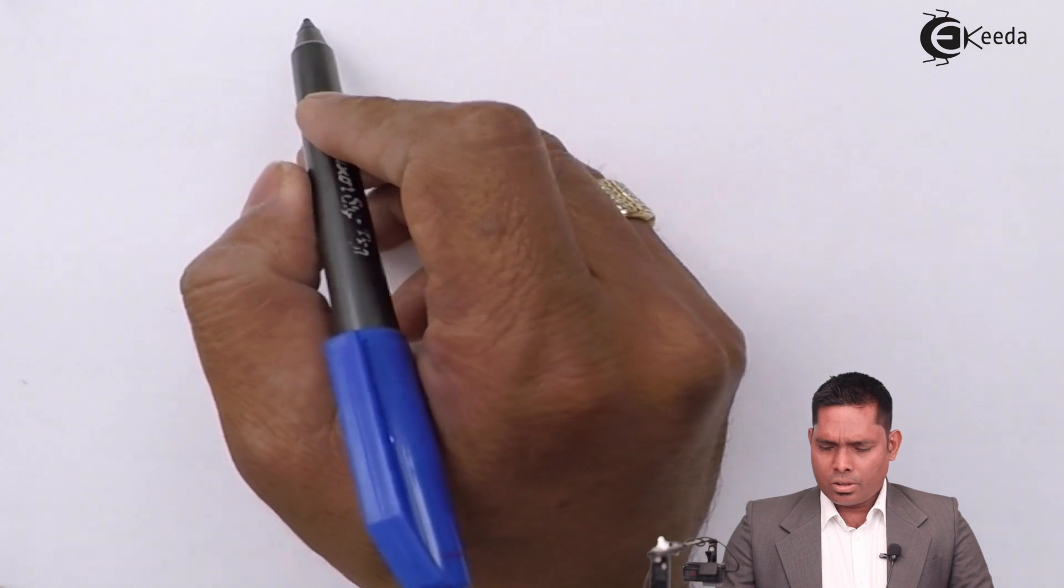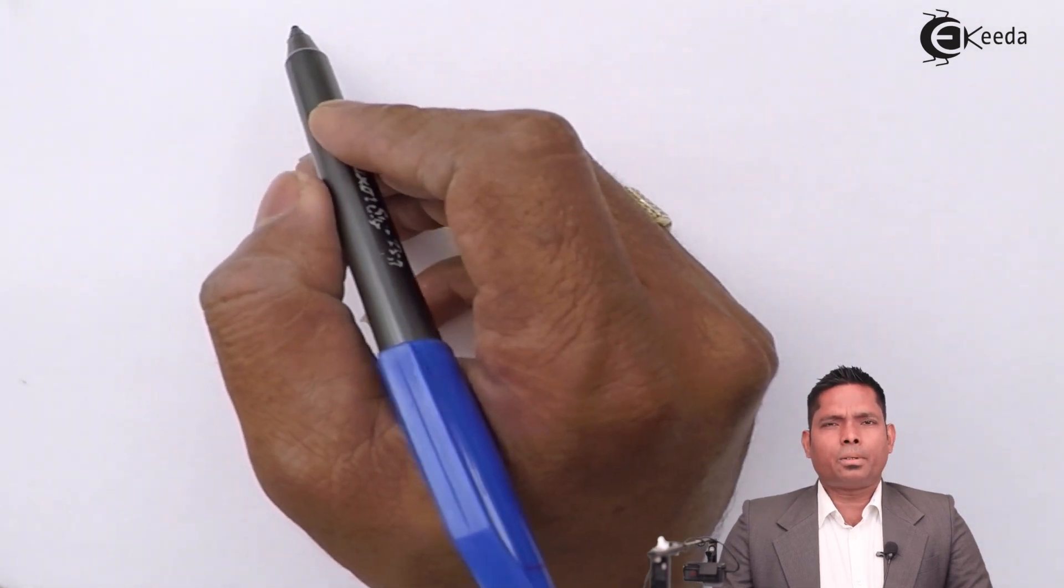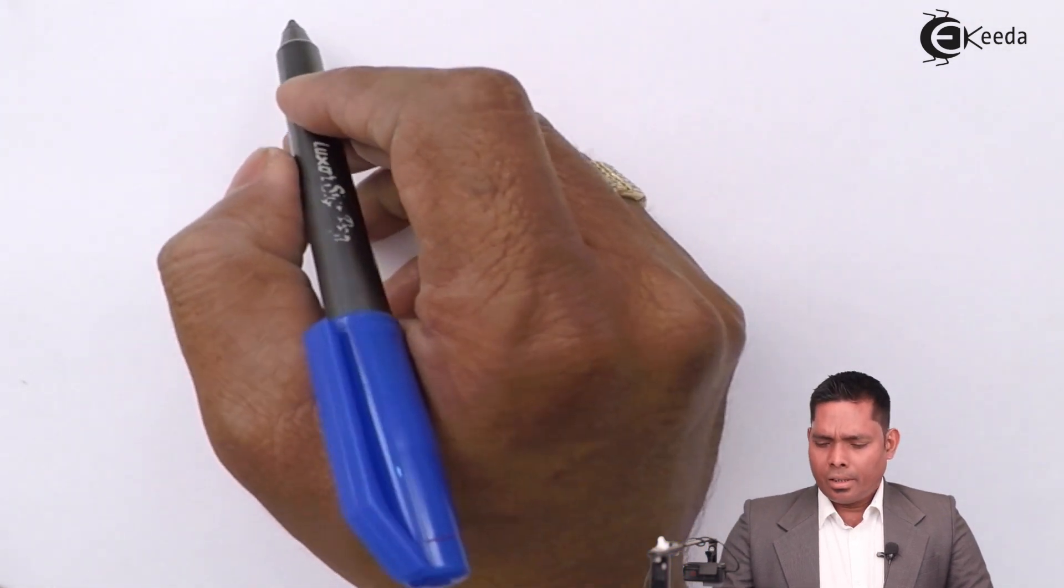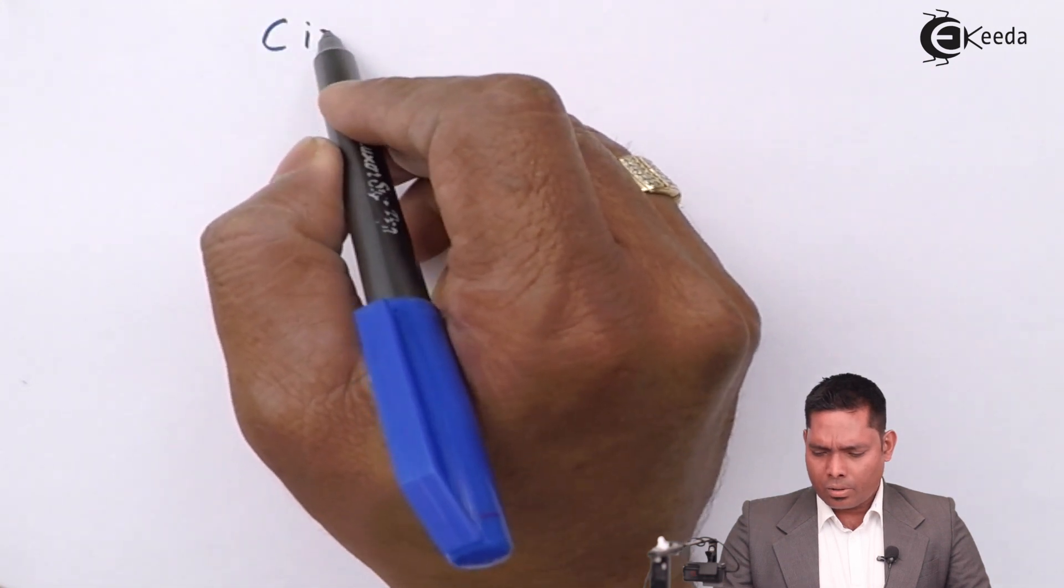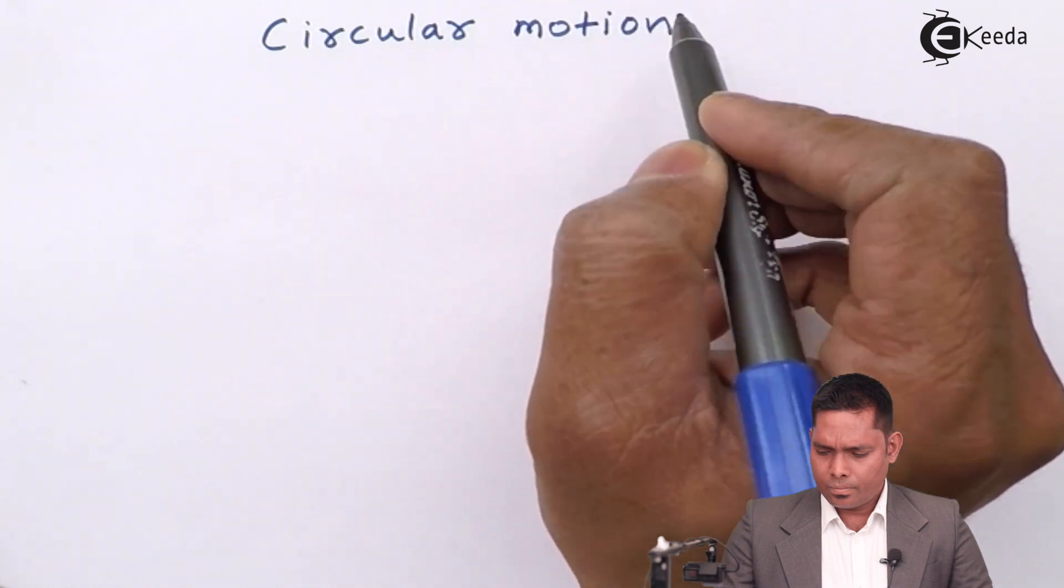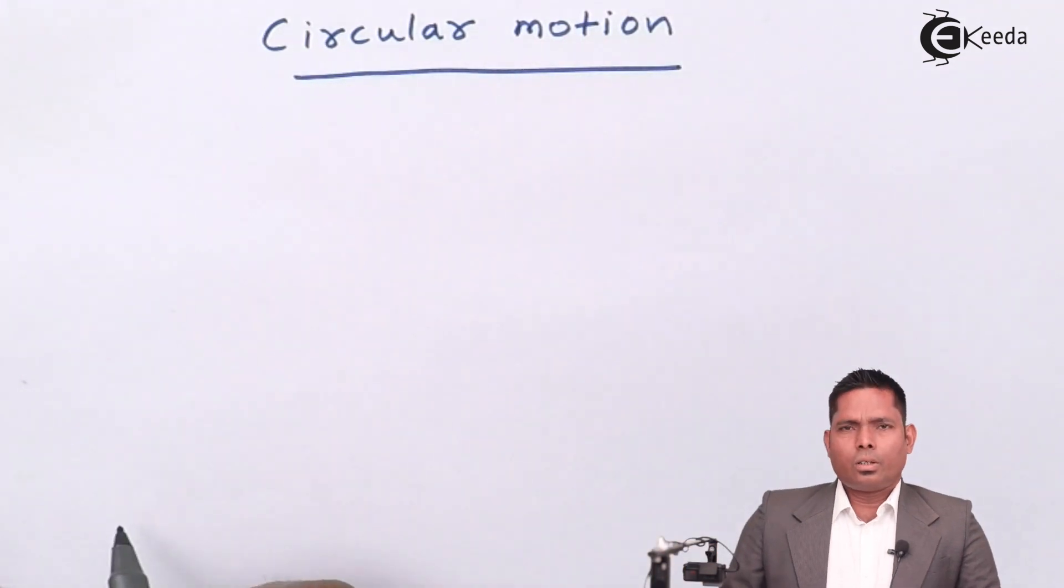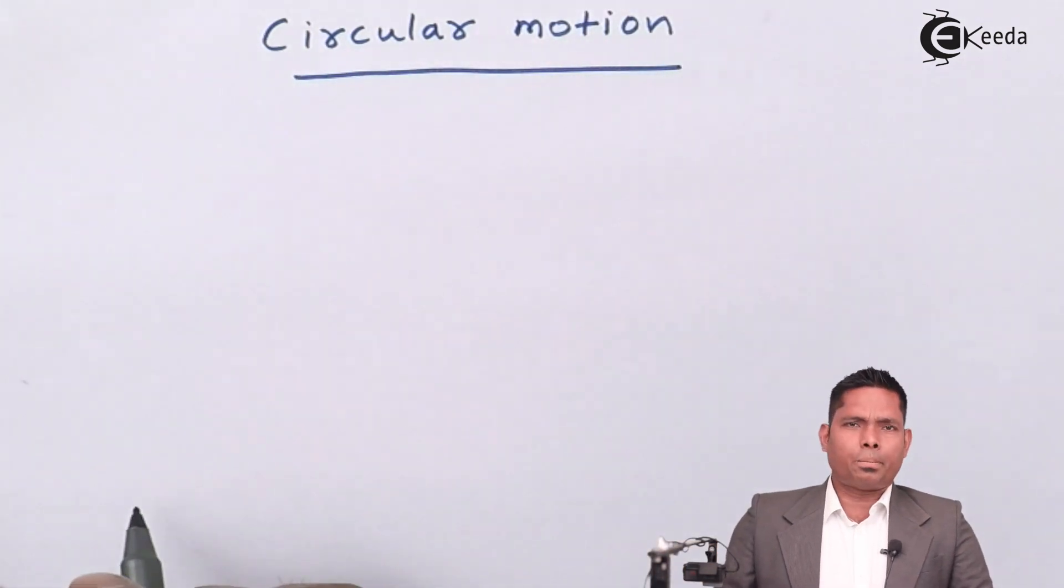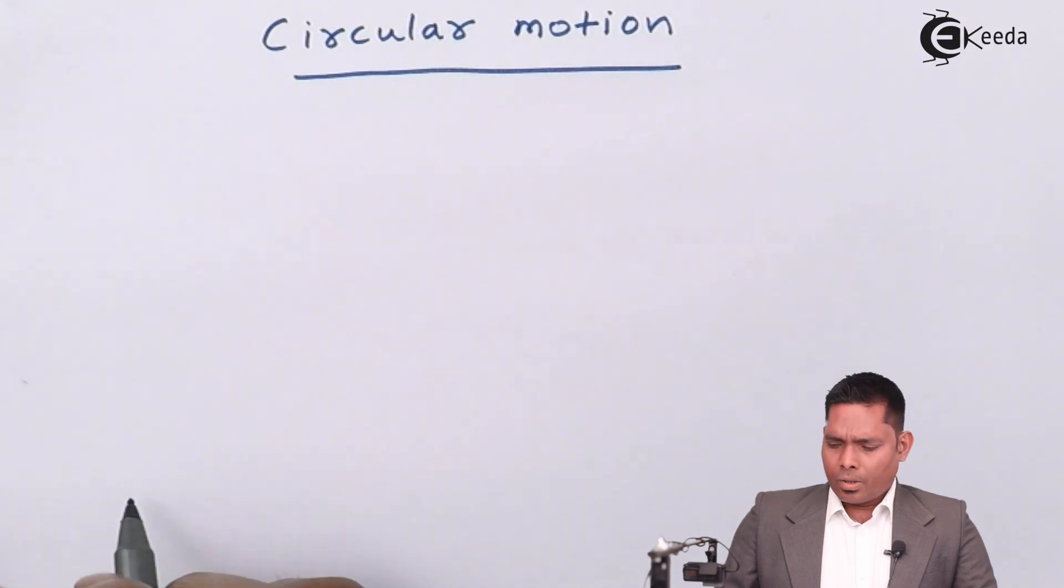Hello students, let us start with circular motion and the first topic we will consider is the introduction to circular motion. So this is the first chapter of 12th standard and this chapter is circular motion. This is the first chapter of paper 1.